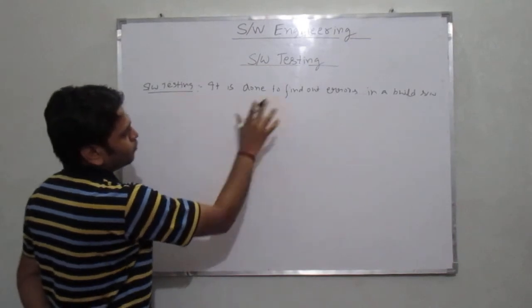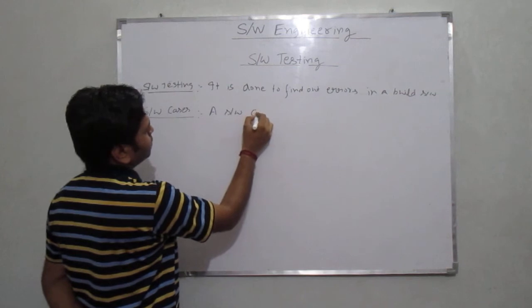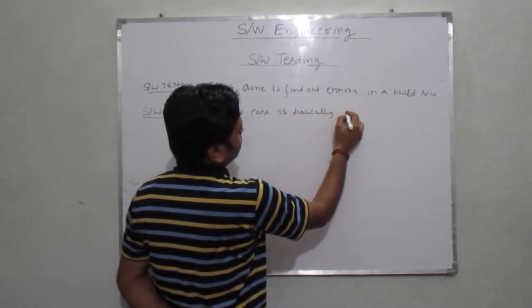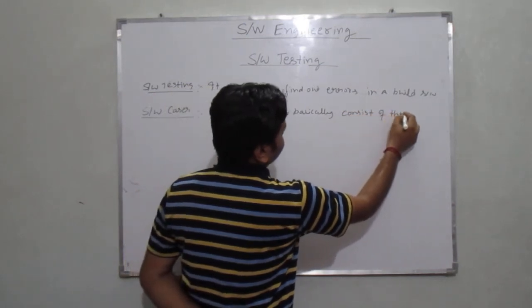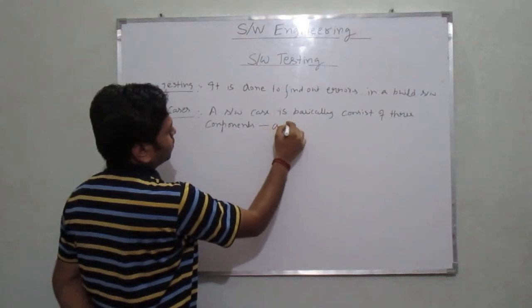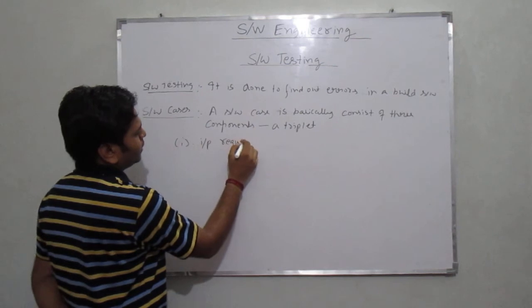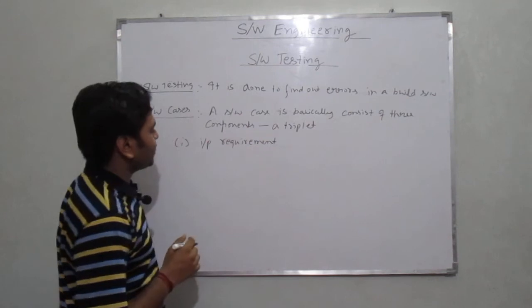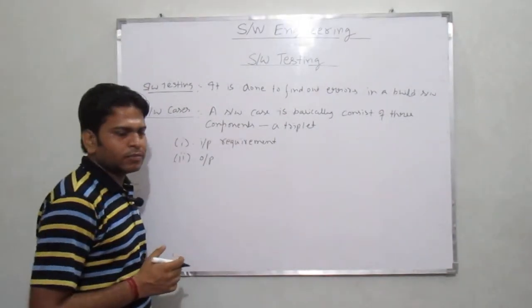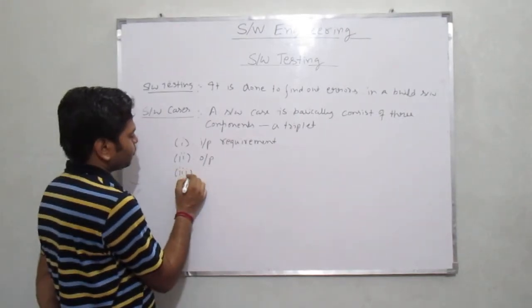To do software testing, we basically make use of certain test cases. A test case basically consists of three components — sometimes we call it a triple — which involves: the input requirements taken from the client side and developed in the SRS, the output that is meant to be produced after building the software, and finally the system itself.